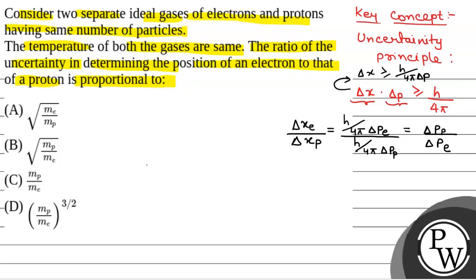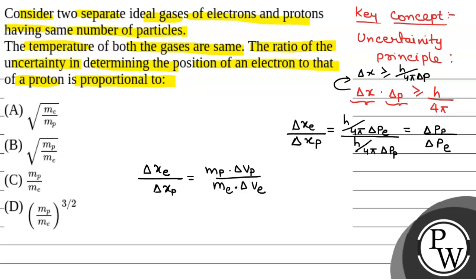So delta x of electron by delta x of proton equals delta p of proton divided by delta p of electron. Delta p of proton is given by mass of proton into delta velocity of proton, and similarly, delta p of electron is given by mass of electron into delta v.